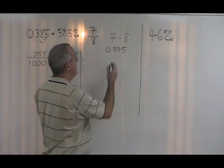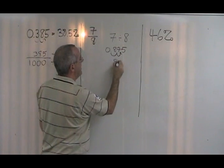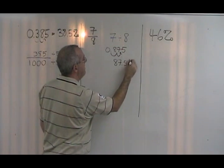To convert the decimal to a percent, we move that decimal two spaces to the right, and we get 87.5%.